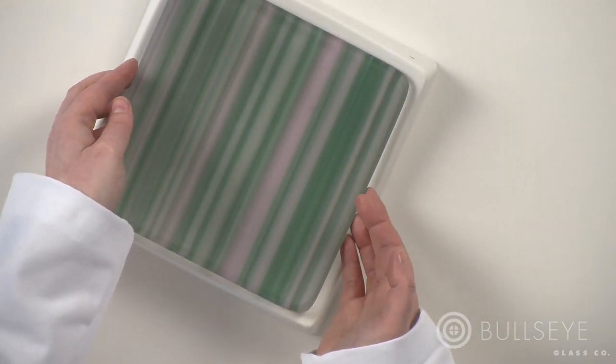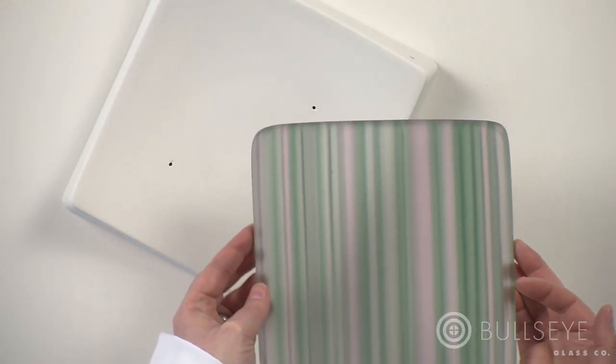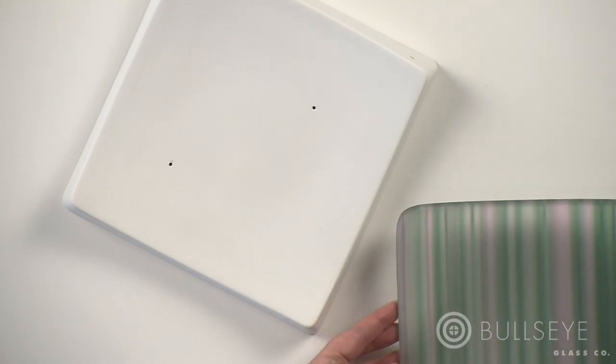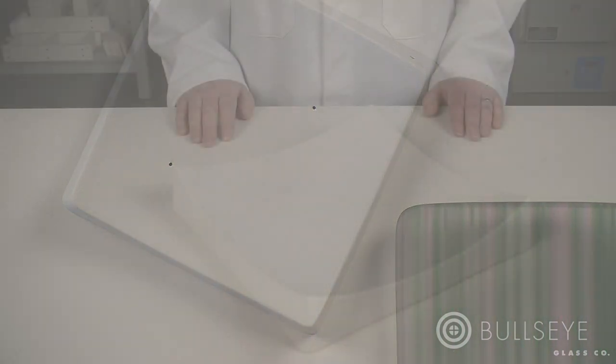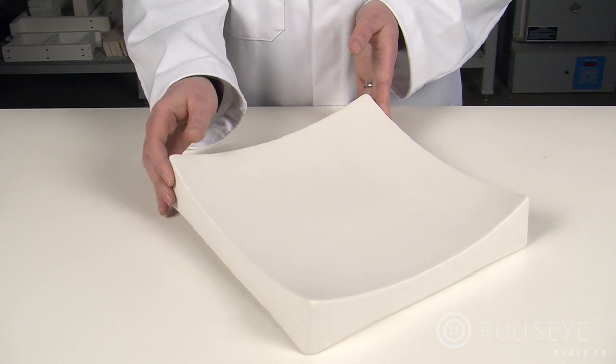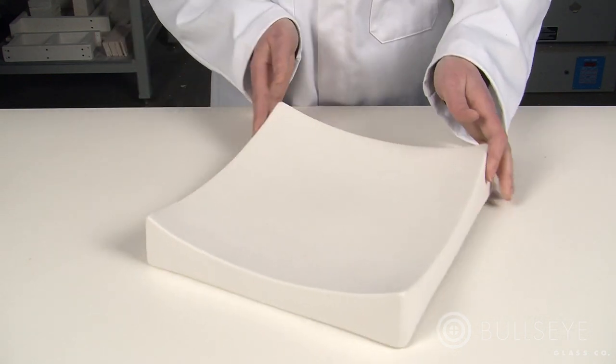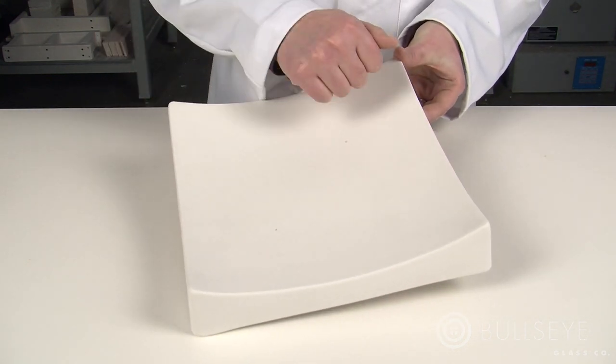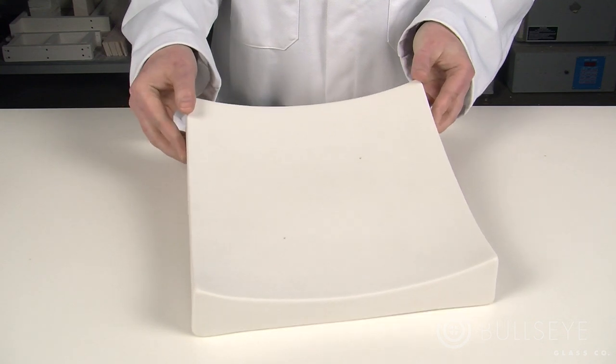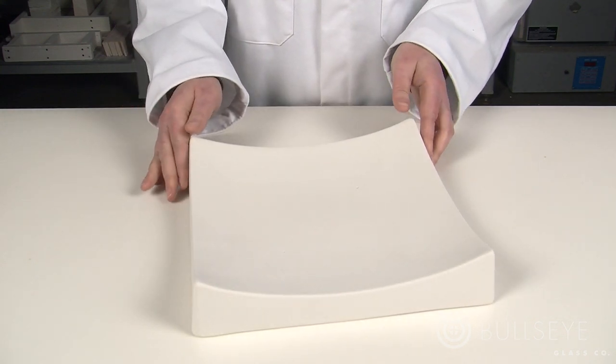Commercially available ceramic molds are used by beginners and professionals alike. A well-made ceramic slumping mold should be made of durable yet porous bisque-fired stoneware that readily accepts primer.